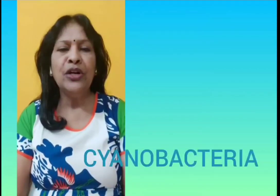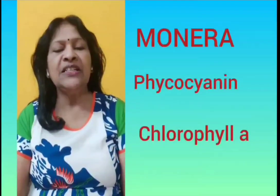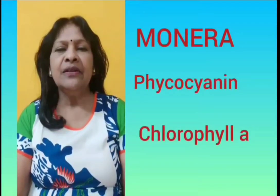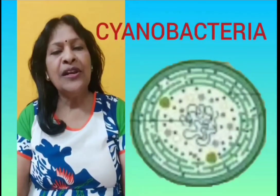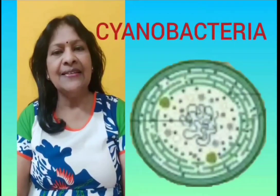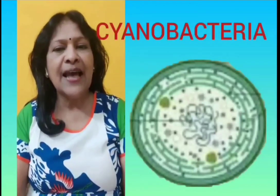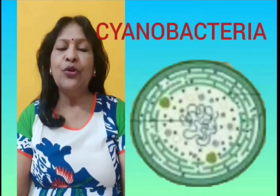If we go back to the most primitive kingdom, Monera, we would find the cyanobacteria. They contain phycocyanin, a blue-green pigment which is capable of absorbing solar energy or sunlight and thus perform photosynthesis. They not only have phycocyanin — some of them have chlorophyll A as well, which is a direct pigment for absorbing photons of sunlight and causing the process of photosynthesis.